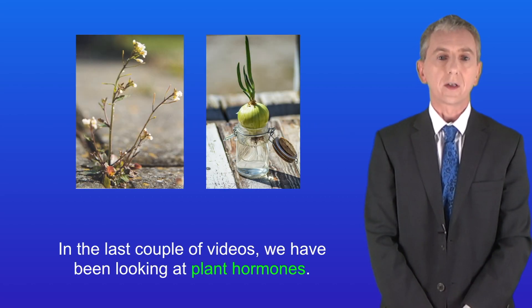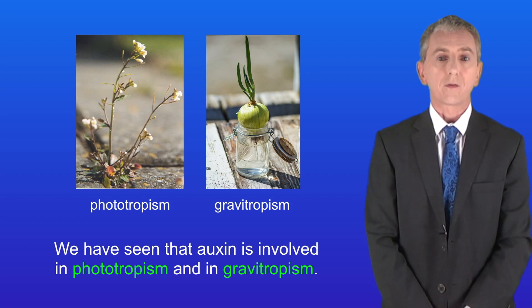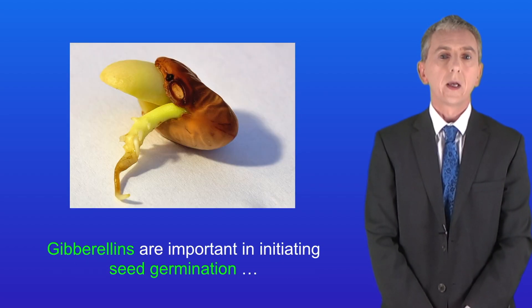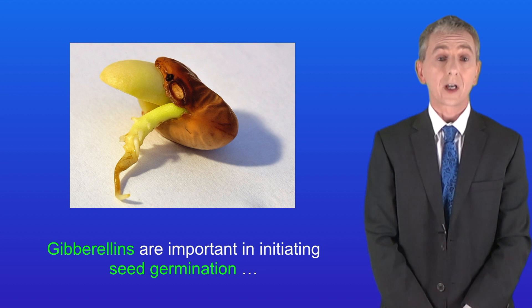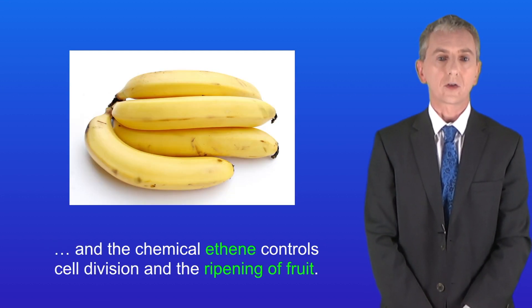In the last couple of videos we've been looking at plant hormones, and we've seen that auxin is involved in phototropism and in gravitropism. Gibberellins are important in initiating seed germination, and the chemical ethene controls cell division and the ripening of fruit.